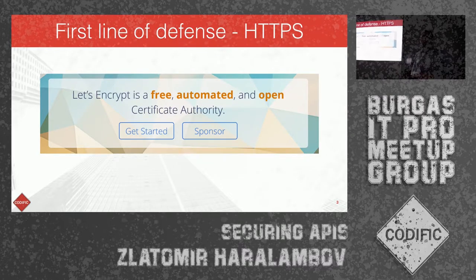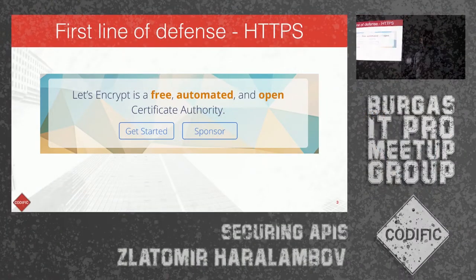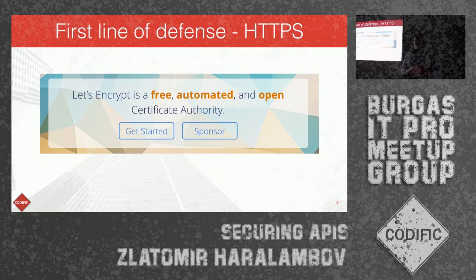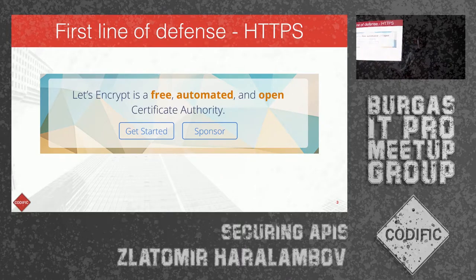Let's start with the basics. The first thing about network security is using HTTPS always and everywhere. Today we have services like Let's Encrypt that allow us to have HTTPS for free. It's easily automated and we can use it everywhere. It's absolutely mandatory — if we don't have that, the entire talk makes no sense. So if you don't use HTTPS, you're living in a state of sin and you deserve everything that happens to you.